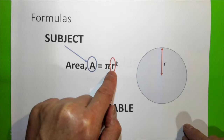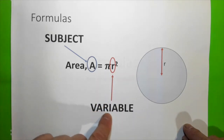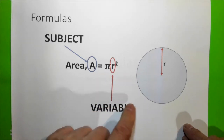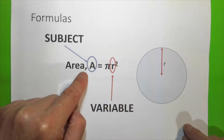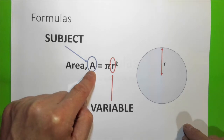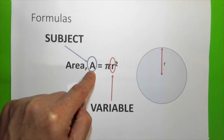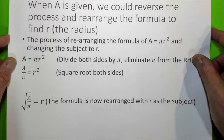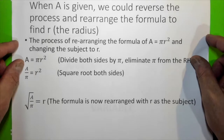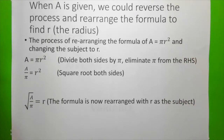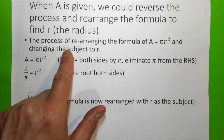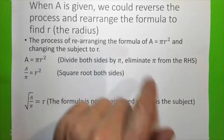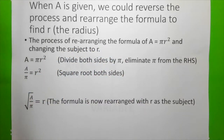Here r is the variable, so if you are given r we can find A. Sometimes when A is given we can reverse the process and rearrange the formula to find r, the radius. So the process involves rearranging A = πr² and changing the subject to r.